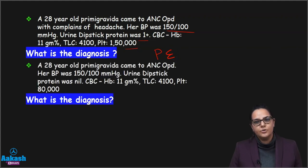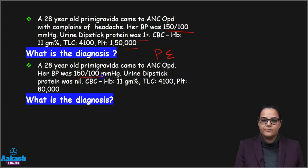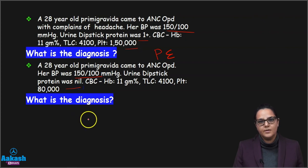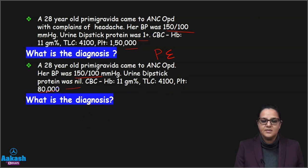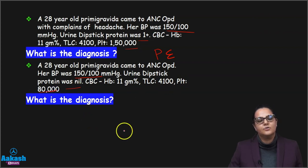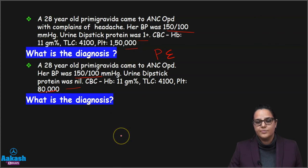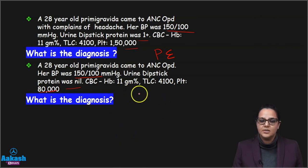Next: a 28-year-old primigravida comes to ANC-OPD, blood pressure is 150/100, urine dipstick protein is nil, but in the CBC blood workup the platelet level is 80,000. She has signs of end organ damage — thrombocytopenia where the platelet is less than 1 lakh. So the diagnosis is again preeclampsia.